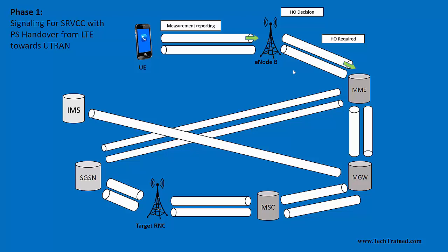This Handover Required message contains the handover type — indicating that SRVCC is going to use UMTS or WCDMA as the radio access technology. It also includes the target ID of the RNC over which the handover needs to take place, the location area identity, and other related information. It also indicates the SRVCC handover type — whether it is the packet switch portion, the circuit switch portion, or both.